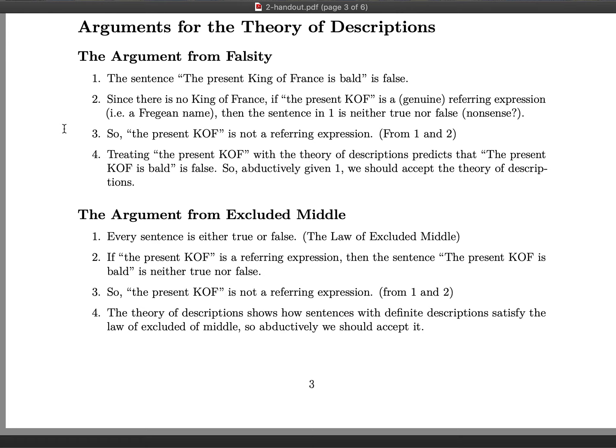Premise two says that if the definite description 'the present king of France' were a referring expression, then the sentence 'The present king of France is bald' would be neither true nor false — the same idea as in the second premise of the first argument. Treating definite descriptions as referring expressions means there are going to be sentences that are neither true nor false. But it's not possible for there to be such sentences. That means, in sub-conclusion three, that 'the present king of France' is not a referring expression.